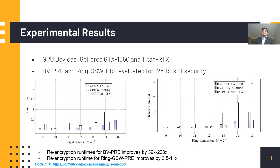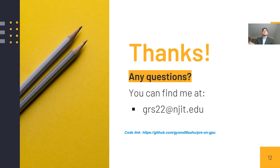The lower speedup for RingGSWPRE is due to the fact that RingGSW ciphertexts are matrices of ring LWE polynomials, and re-encrypting them one by one takes significant time. Thank you so much for listening. If you have any questions or want to share anything, you can reach me at the provided email. You can also find the code for this paper at the link provided.